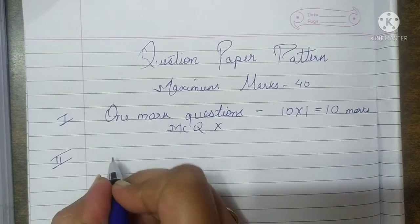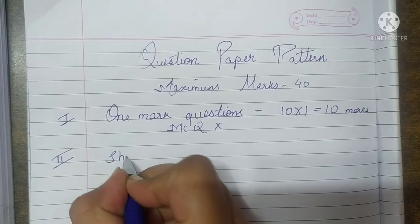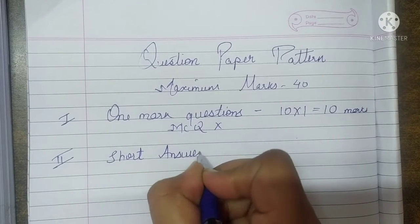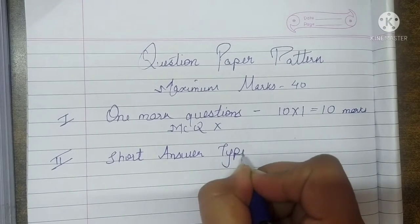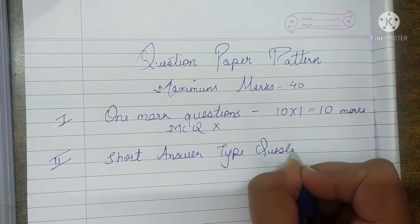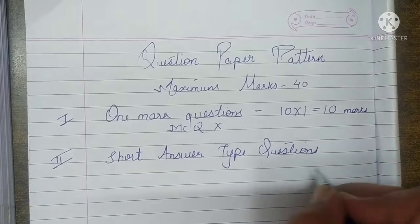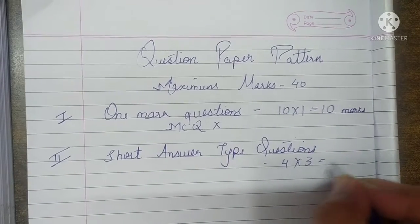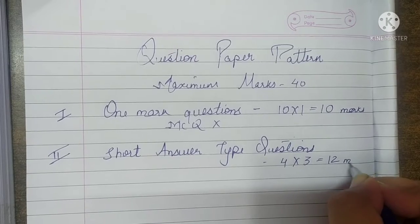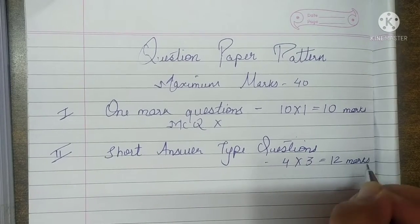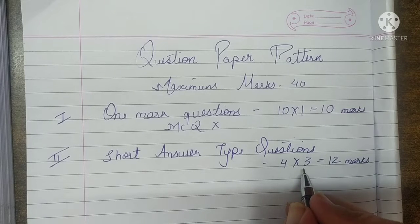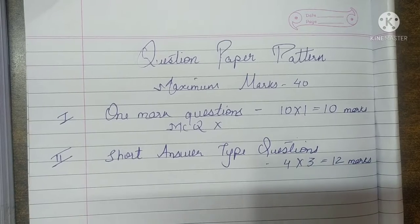Next, section 2 will contain short answer type questions. The marks allotted are 3 marks to 4 questions — 4 questions, 3 marks each — so total it will be 12 marks. This is section B, short answer type questions. CBSE is expecting 3 different points, so as much as possible, write in points.